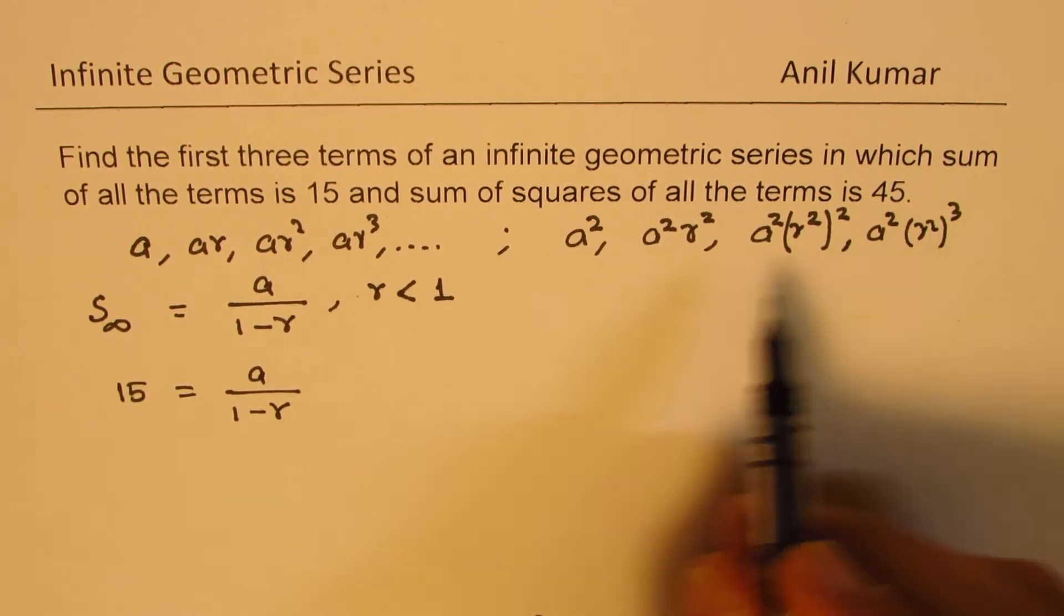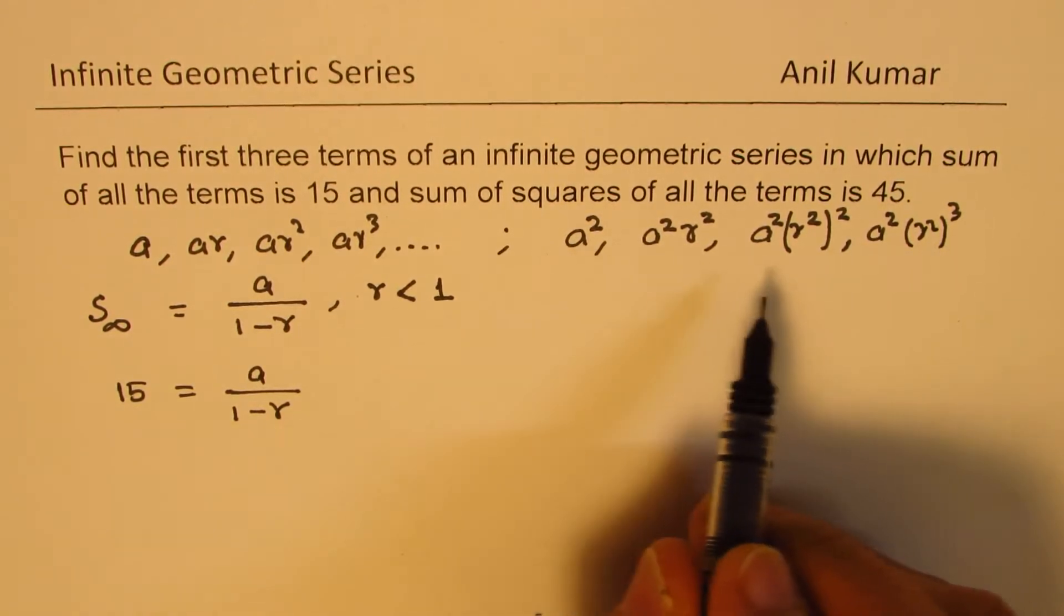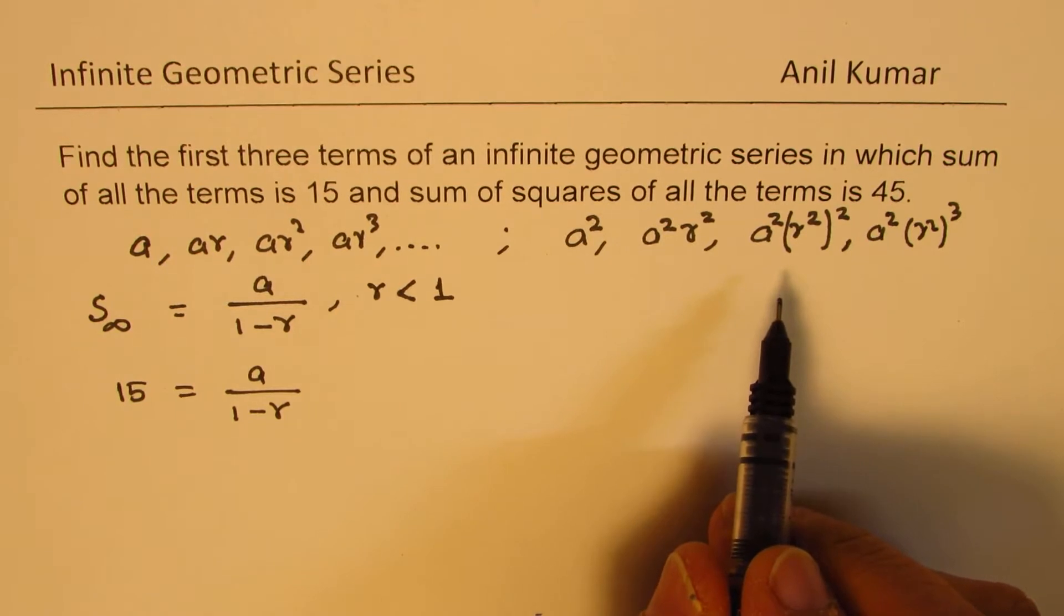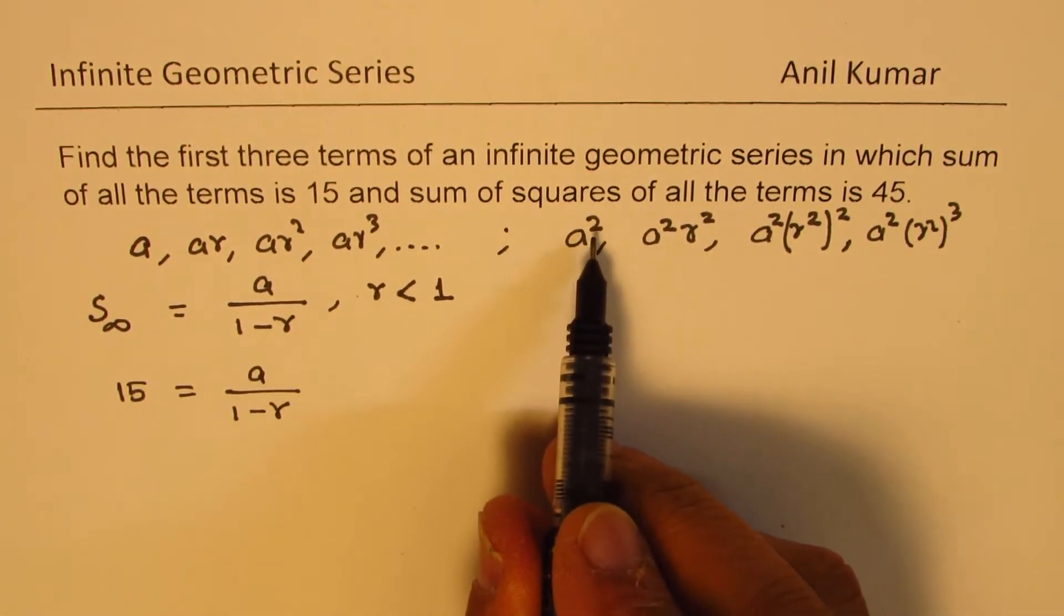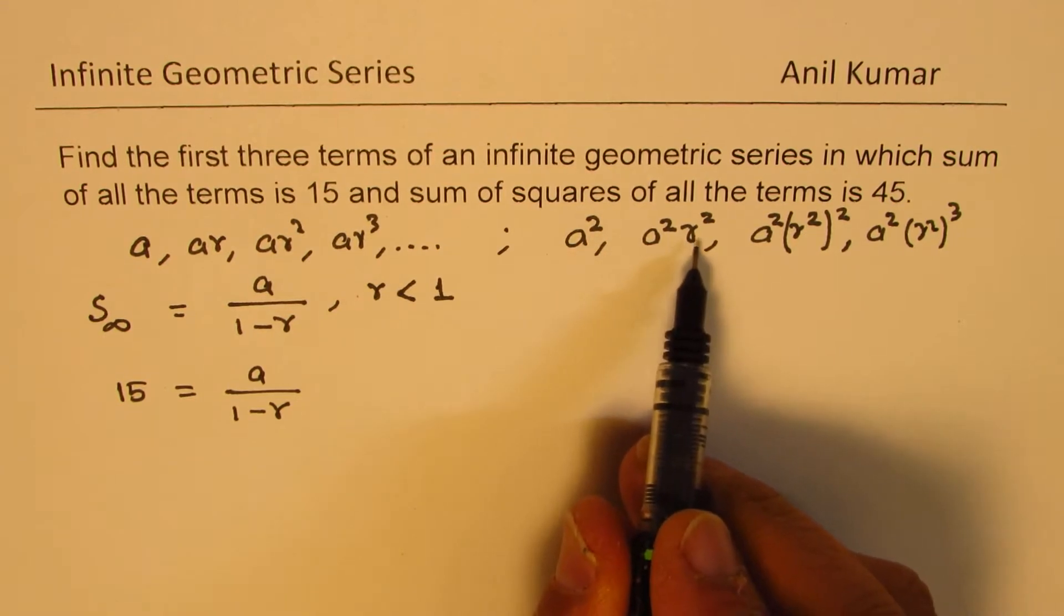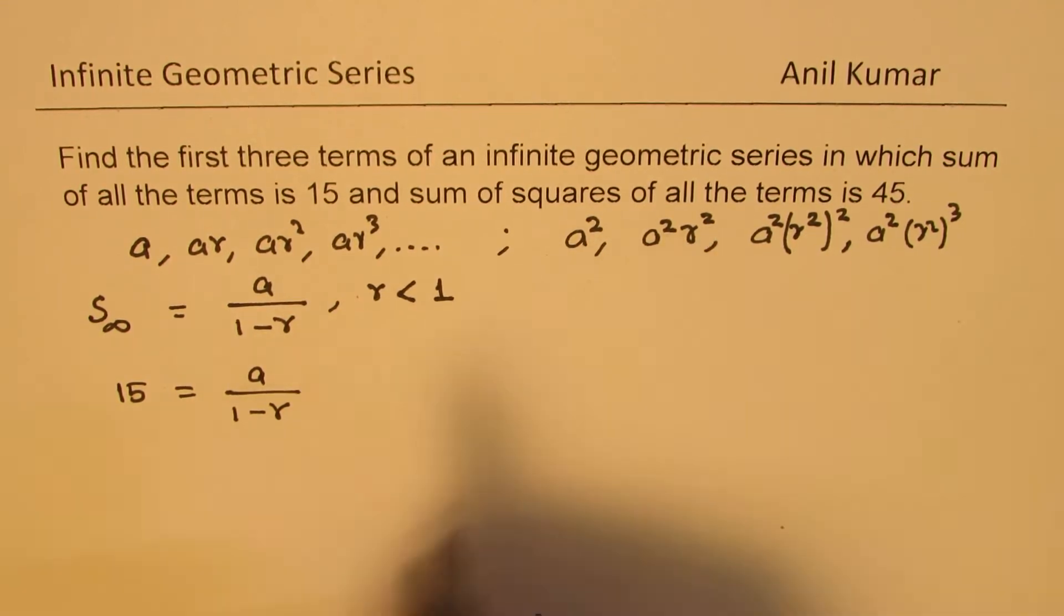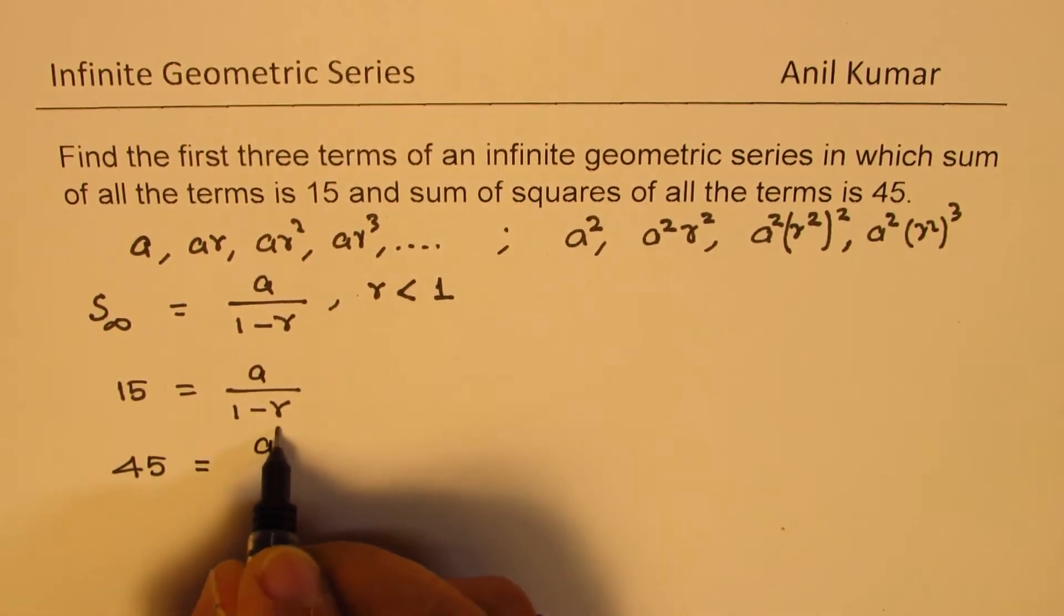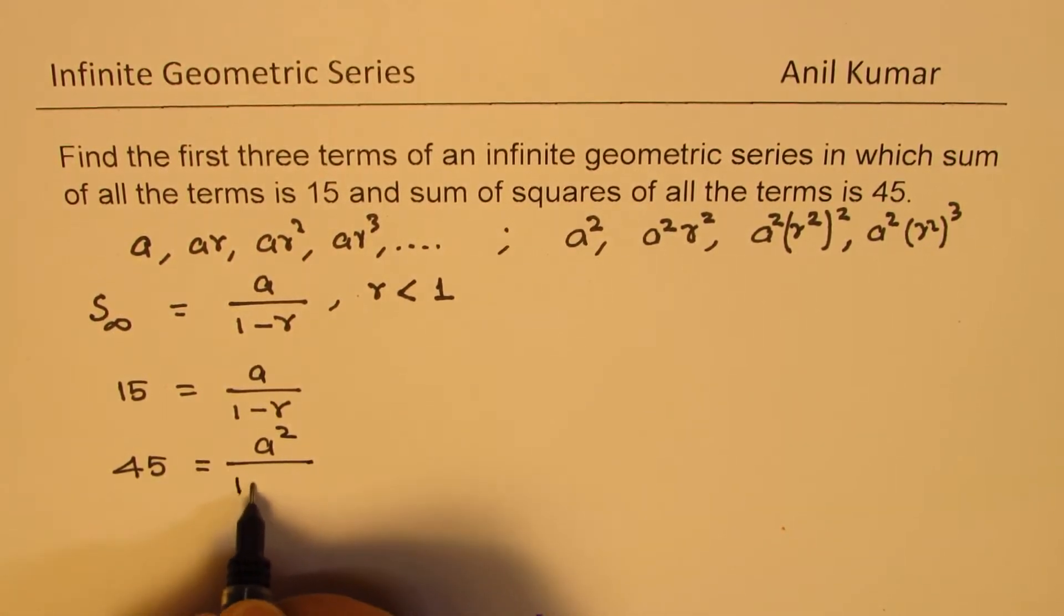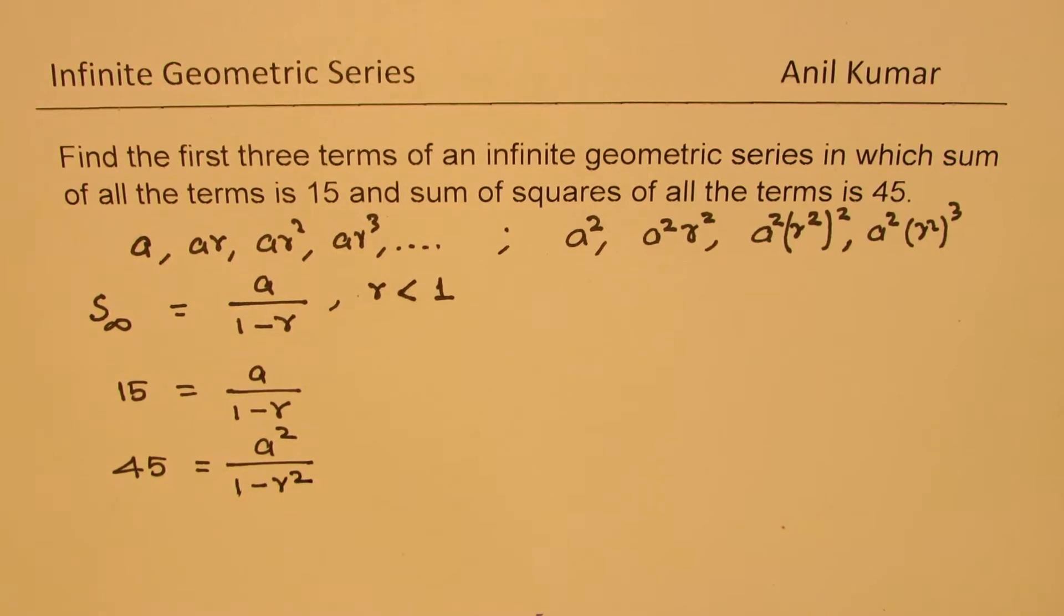So for the square series, what we have is 45 is the sum. The first term is A square and the ratio is R square. So we get the second equation as 45 equals A square over 1 minus R square.